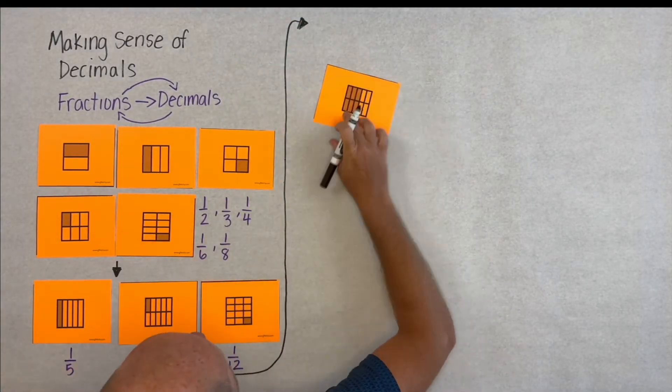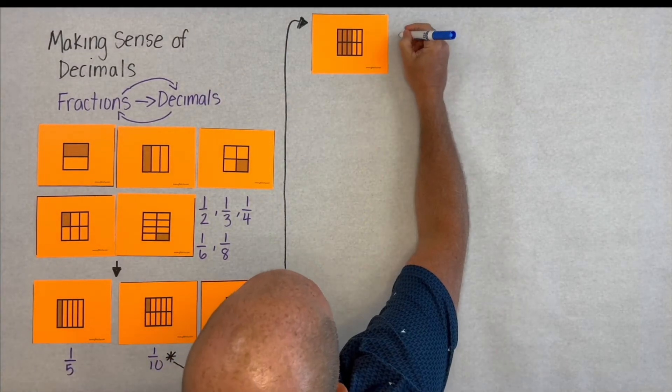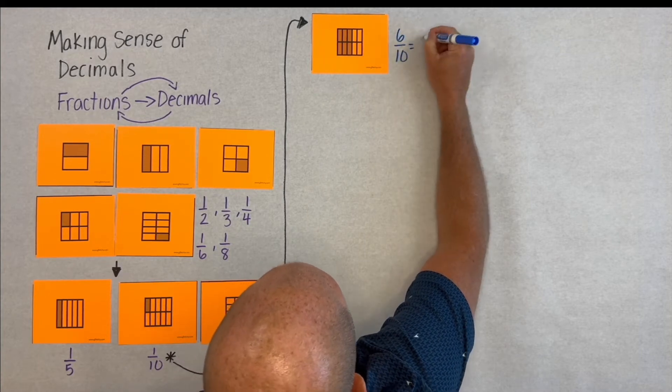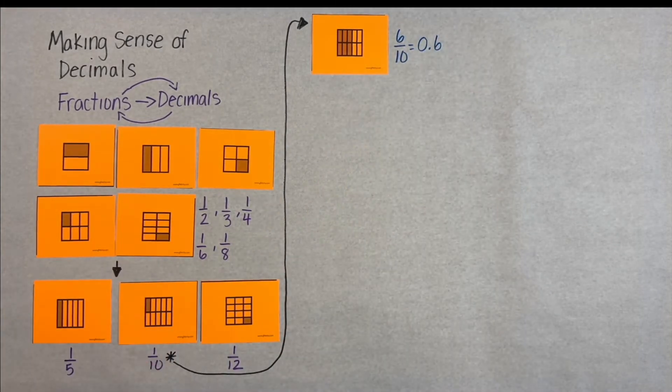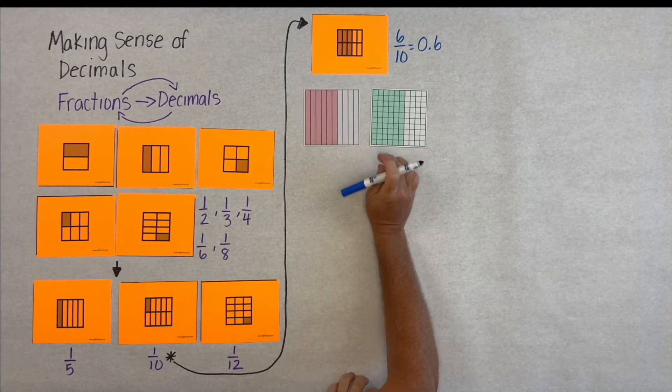So, as students begin to explore decimals, they might look at this and see it as six-tenths as a fraction. And they begin to see that fraction notation and decimal form can also be the same or equal.